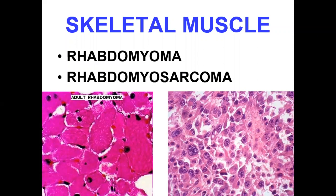Bismillahirrahmanirrahim. In the previous lecture, we discussed about soft tissue tumors and we covered five soft tissue tumors: fibrosis and fibrosarcoma, fat tumors — lipoma and liposarcoma — and fibrohistiocytic tumors, that is benign fibrous histiocytoma, dermatofibrosarcoma, and malignant fibrous histiocytoma.